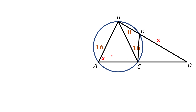Let's call angle A here alpha. Because ABC is an isosceles triangle, angle C also equals alpha. That means angle ABC equals 180 minus 2 alpha. Now, ABEC is an inscribed cyclic quadrilateral — a quadrilateral inscribed in a circle if and only if its opposite angles sum to 180 degrees. So if angle A is alpha, angle E must be 180 minus alpha, which means the supplementary angle right there is alpha. The other angle at E computes to 180 minus alpha, and that's all we can determine so far.